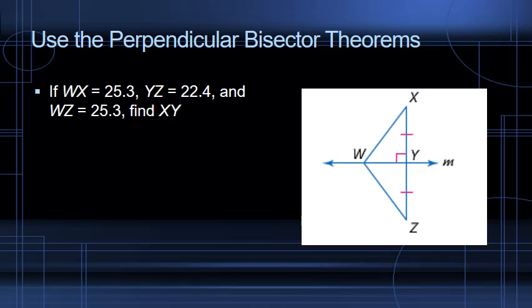We're beginning to explore bisectors of triangles, starting with the perpendicular bisector theorem and its converse. The perpendicular bisector theorem states that if a point is on the perpendicular bisector of a segment, then it is equidistant from the endpoints of the segment.